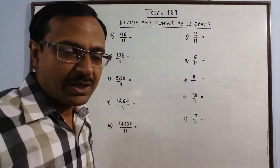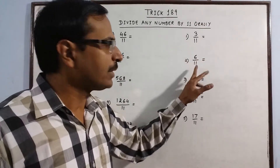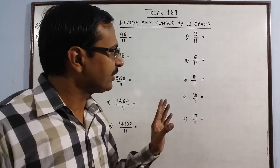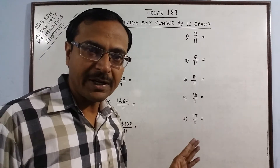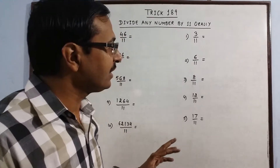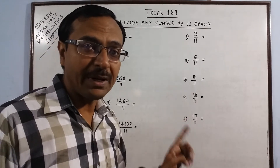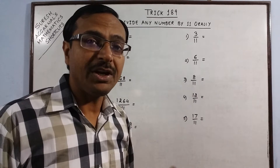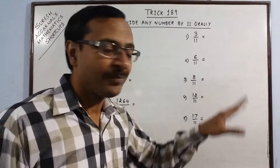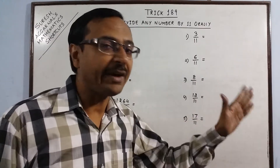The first thing we need to understand is that when you divide any number by 11, we get a non-terminating decimal, and the decimal repeats after every two digits. So we have a pair of digits after the decimal point that will keep on repeating infinitely.